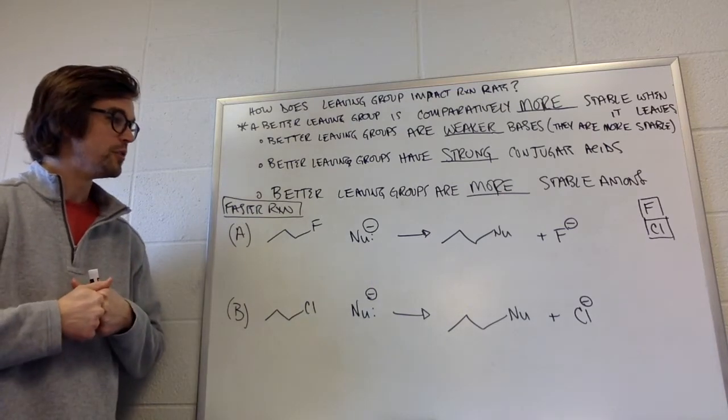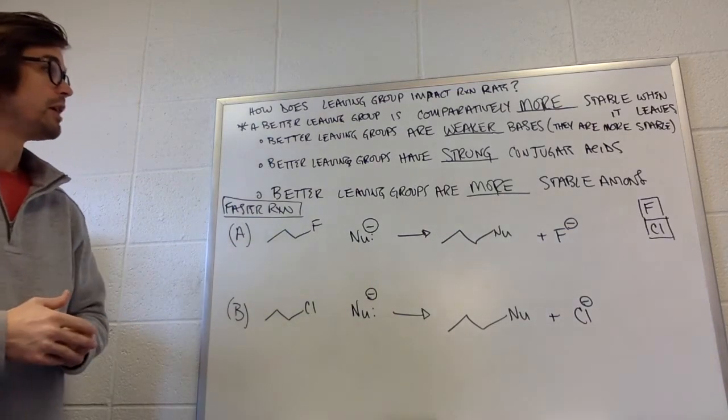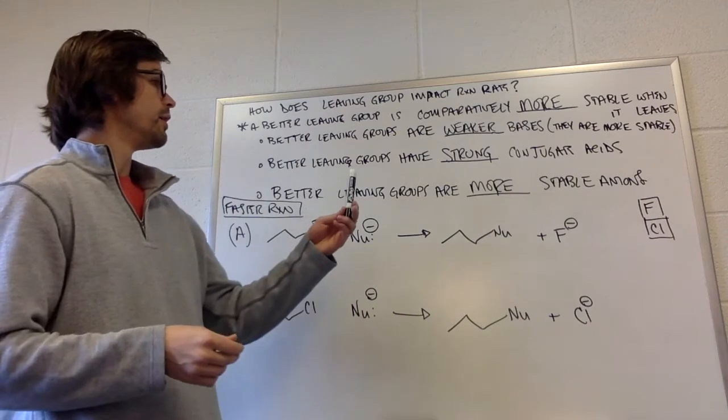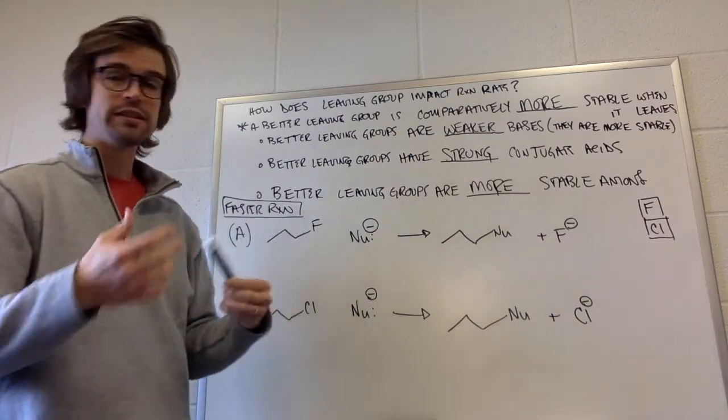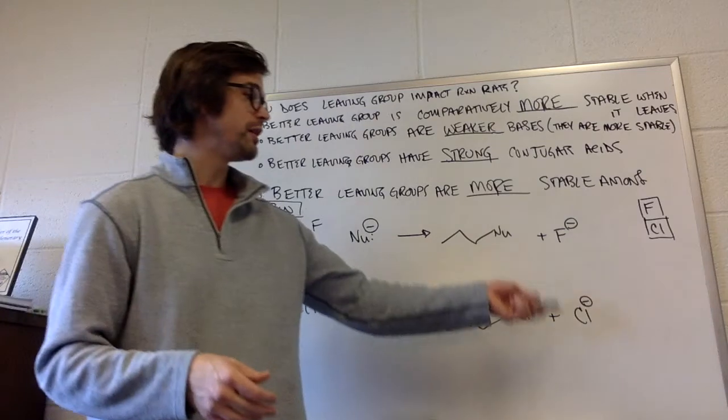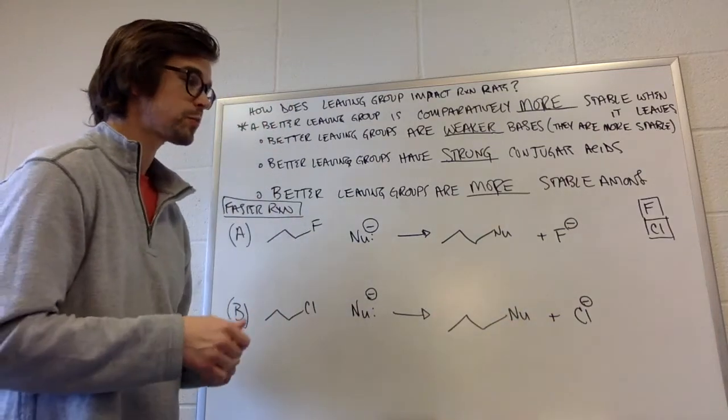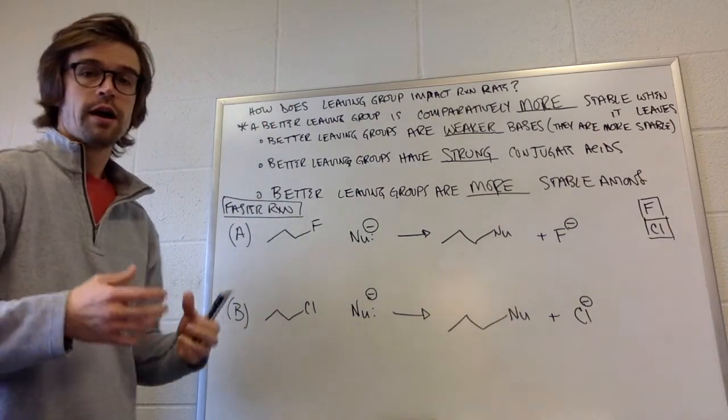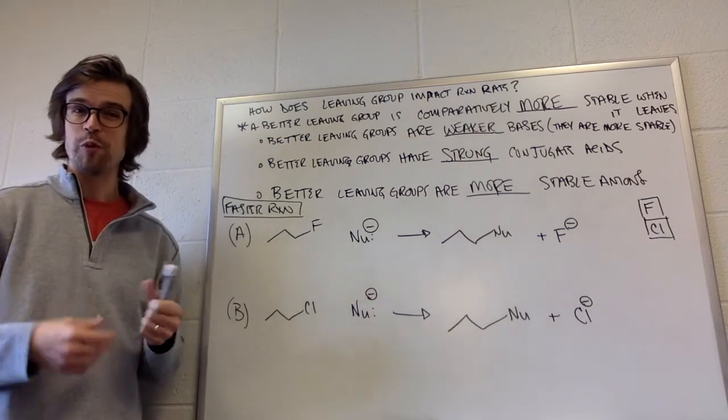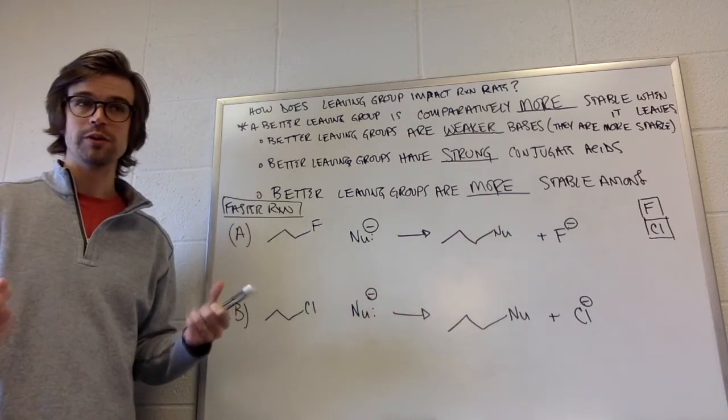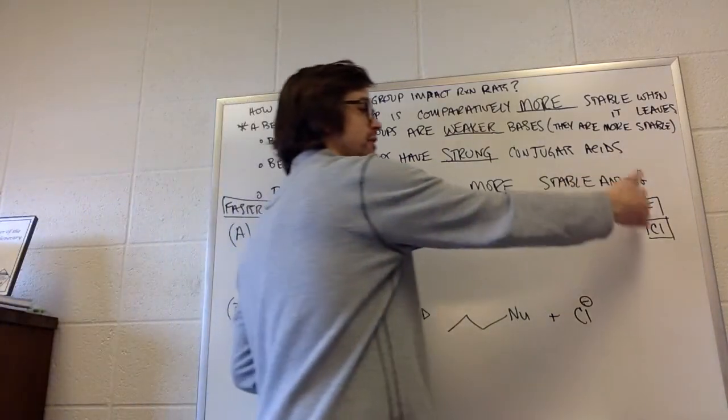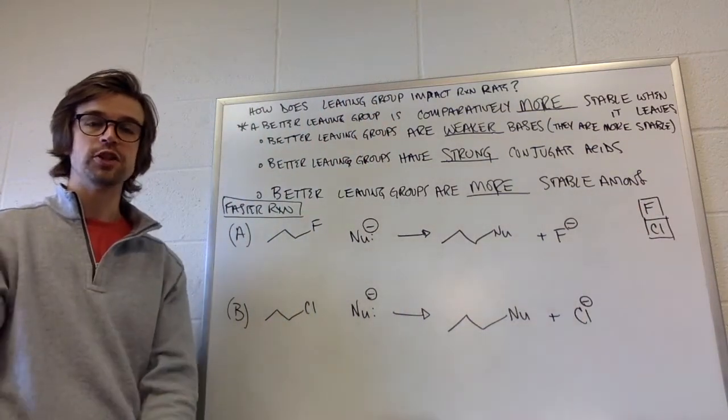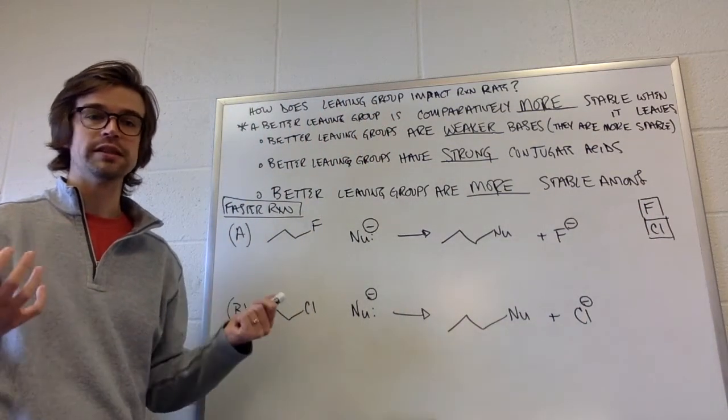All right, you did that. So the better leaving group is the weaker base. It's the more stable anion. So which of these is a more stable anion? Well, when things are in the same group, what we learned in that acid base chapter was that if they're in the same column of the periodic table, the larger surface area is what makes it more stable.